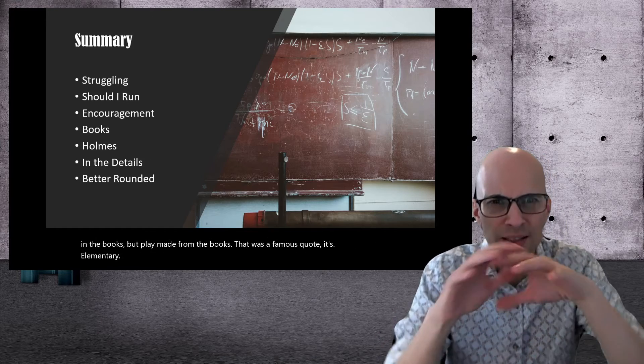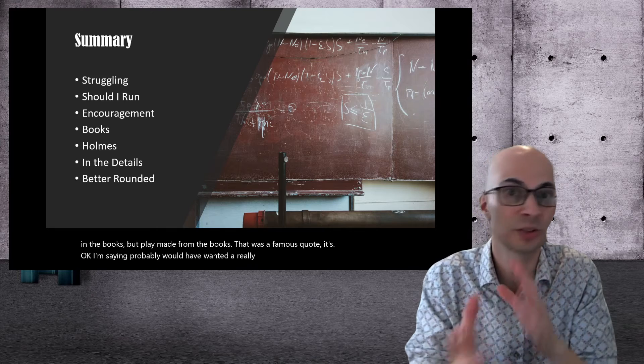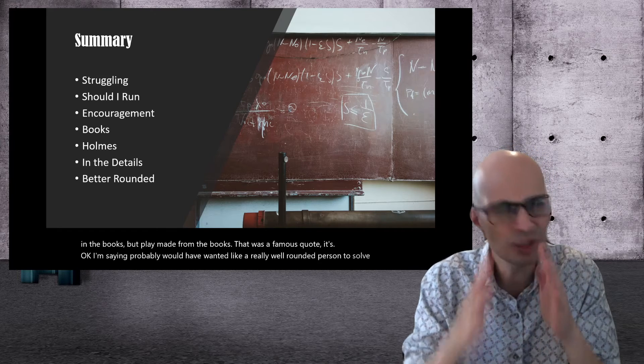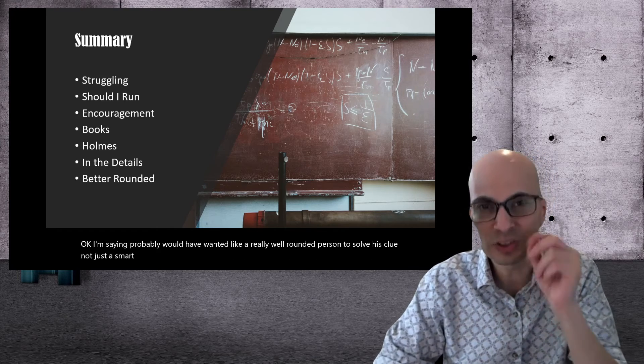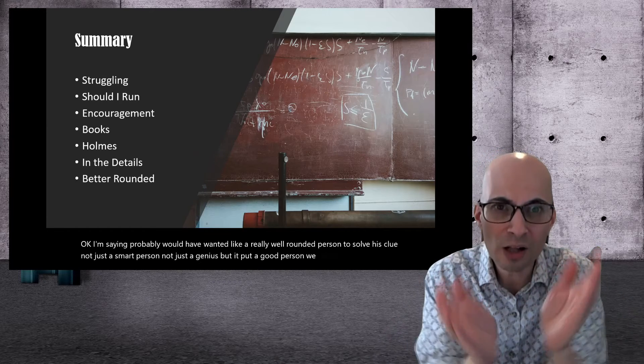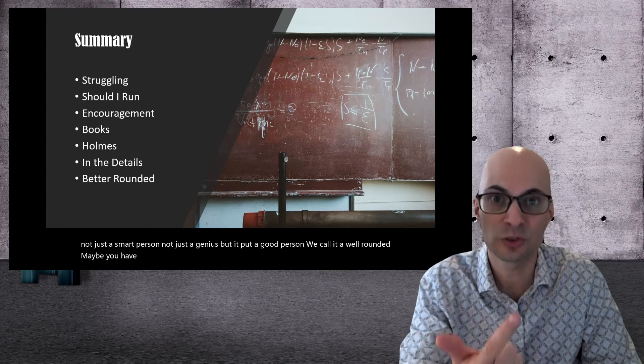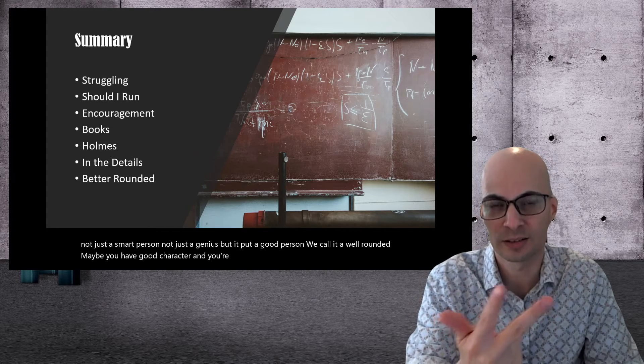Okay. Well, Einstein probably would have wanted like a really well rounded person to solve his clue. Not just a smart person, not just a genius, but a good person. We call it well rounded. Maybe you have a good character, and you're smart, and you're kind, right?